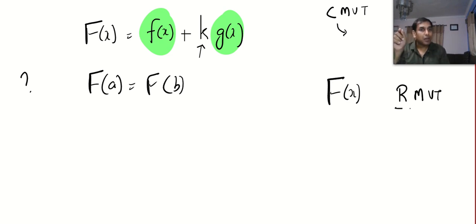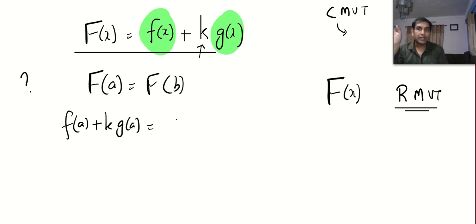Now F of a equal to F of b means f of a plus k into g of a is equal to f of b plus k times g of b.